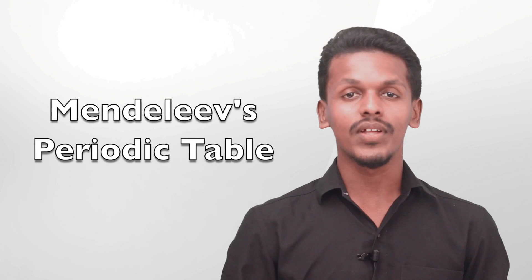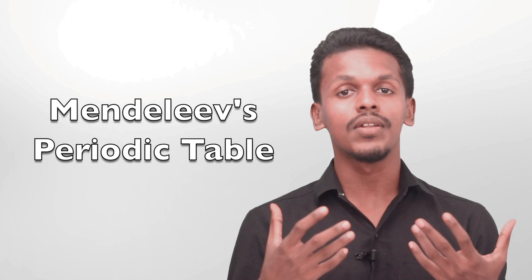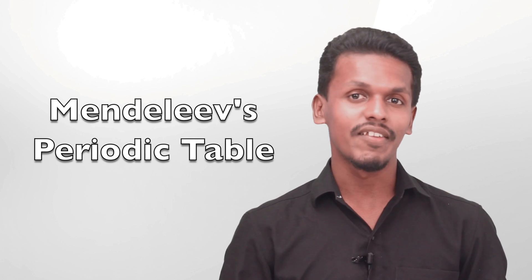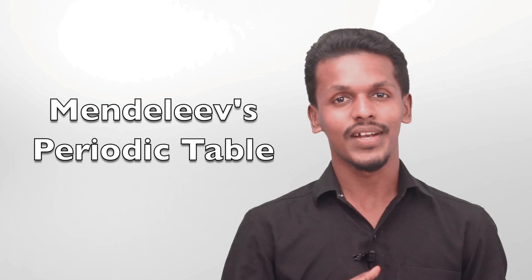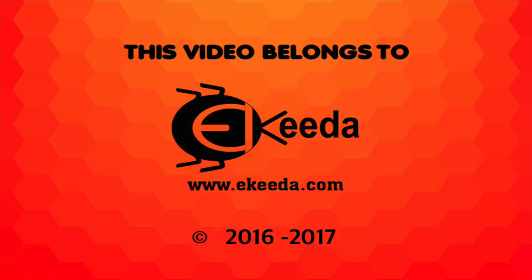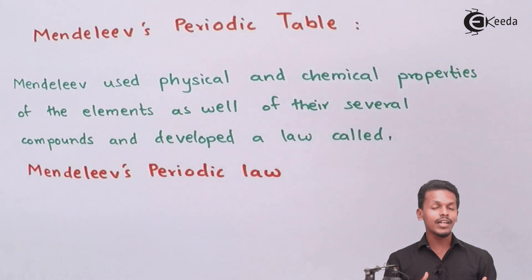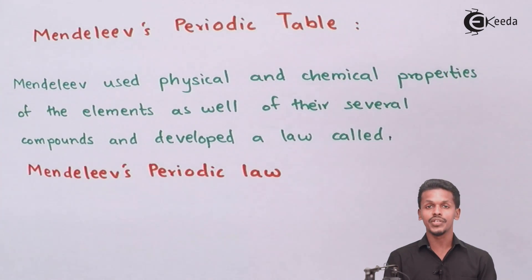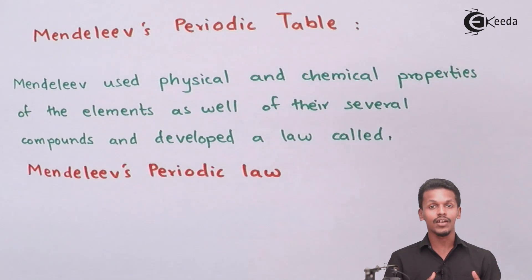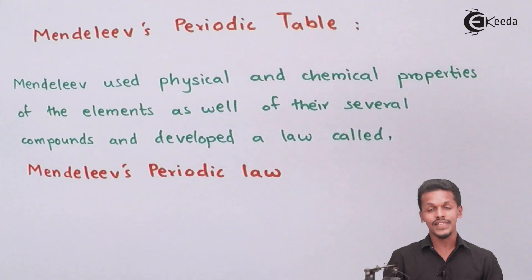Now we are going to talk about the main one — the person on the basis of whose work the modern periodic table has been evolved — that is Mendeleev. He made a very great contribution in the classification of elements, because of which we arrived at the modern periodic table that we see in our textbooks today as science students.